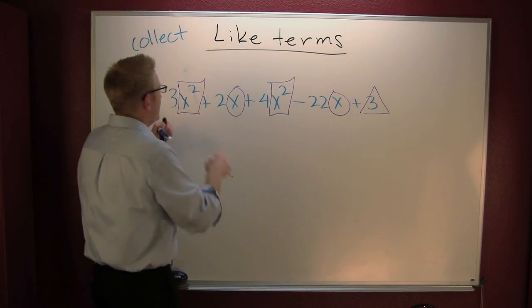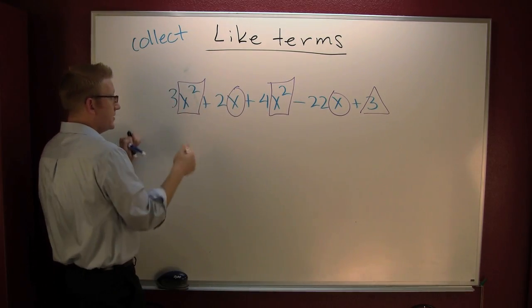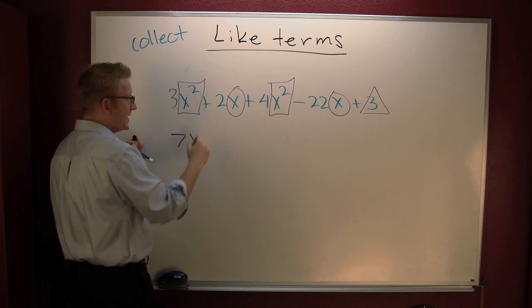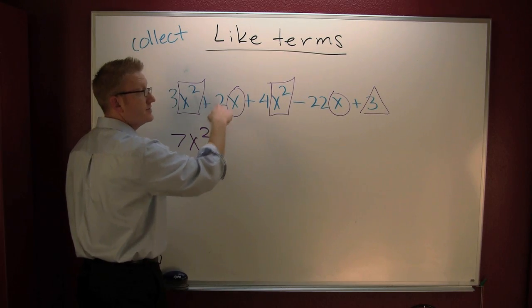Here I got three x squareds. And there's four more x squareds. Altogether I have seven x squareds. How many x's do I have?